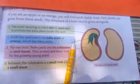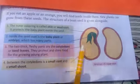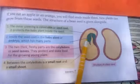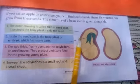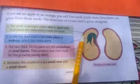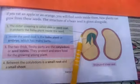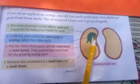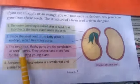So where is the baby plant? This is the baby plant, and the function of the seed coat is to protect this particular baby plant.